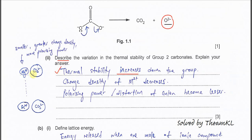Why? Because the charge density of the Group 2 cation decreases — the size is getting larger but the charge remains the same, so charge density decreases. Therefore polarizing power becomes weaker, so the distortion of the carbonate anion is lesser and the C-O bond is less weakened.